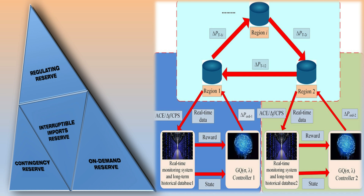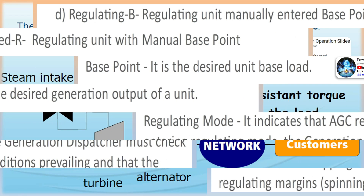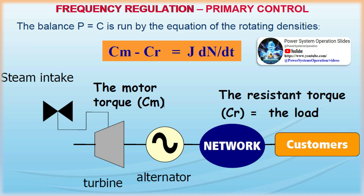Generation under AGC: it is the sum of the generation from all AGC units. Emergency mode: it indicates that the system is in an abnormal state. This mode is entered and left automatically and allows the AGC to regulate with higher ramp rates and wider production limits than in normal mode. Emergency mode must not be used for long durations. Area control error ACE: the ACE shows the current mismatch between the active power generation and load. It is calculated from the frequency deviation and the active power interchange deviation depending upon the area control mode.